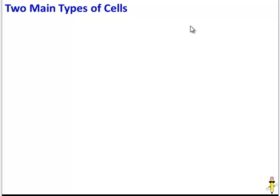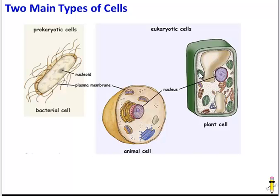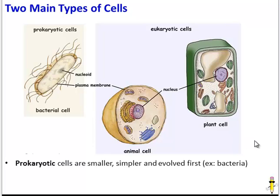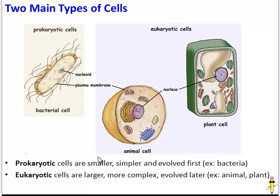So that is useful in distinguishing the two main types of cells. Some cells are prokaryotic, and some cells are eukaryotic. In general, prokaryotic cells are smaller, simpler, and they evolved earlier — a common example is bacteria. Eukaryotic cells, in contrast, are a bit larger, more complex, and thus evolved later.